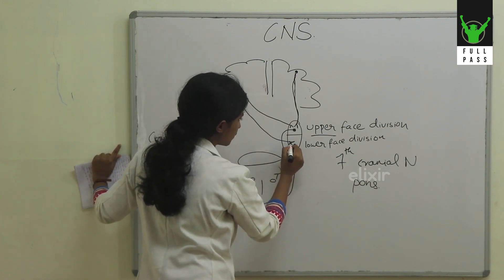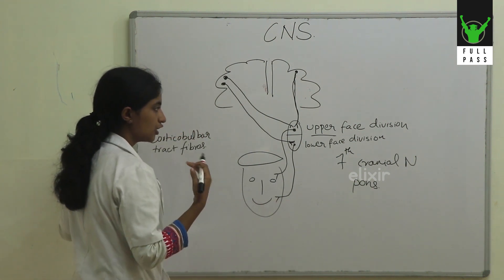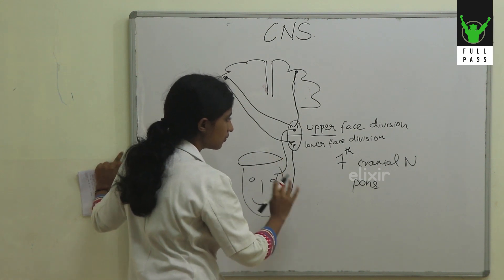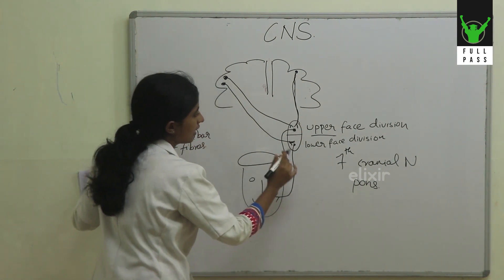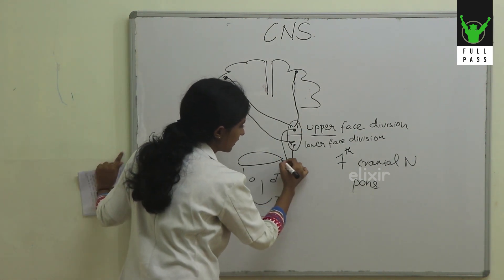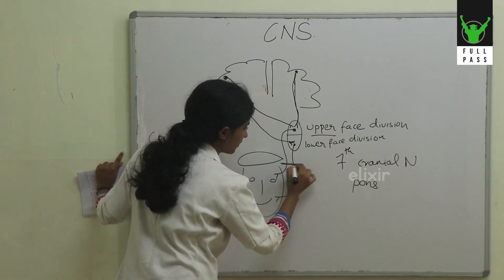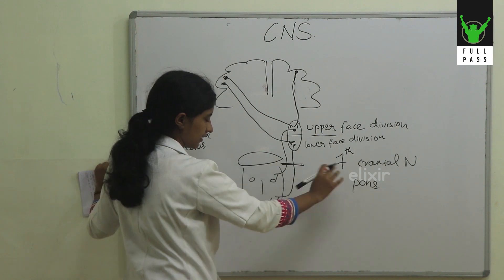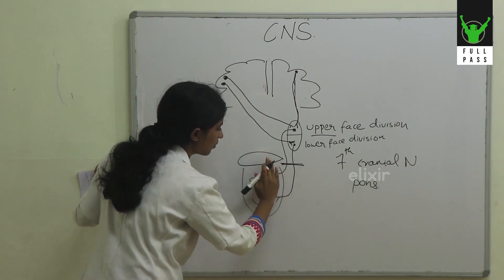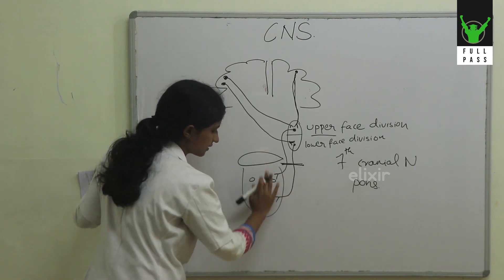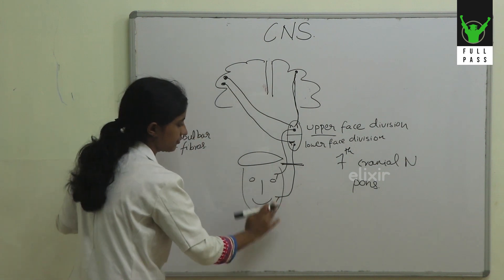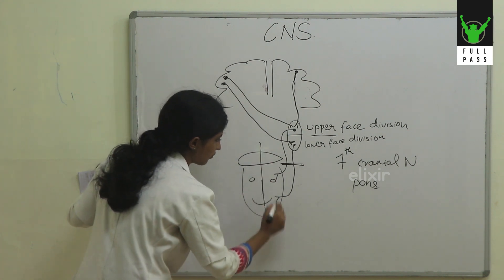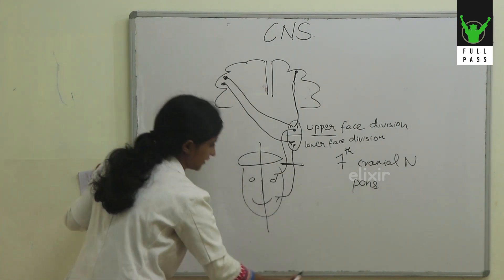So what happens when there is a lower motor neuron lesion of the facial nerve? In lower motor neuron lesions, the lower motor neurons are affected. When they get affected, the whole of the face on the same side will be affected.